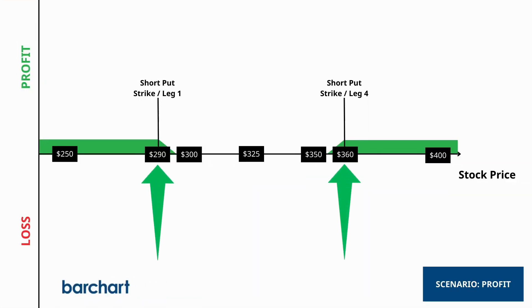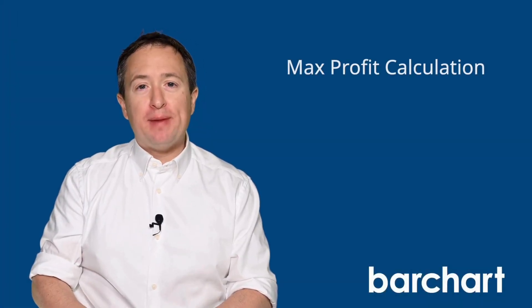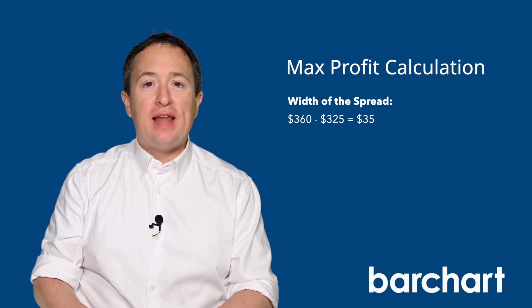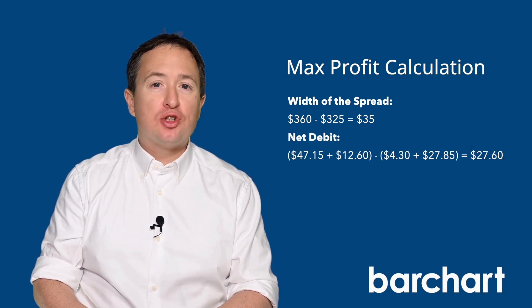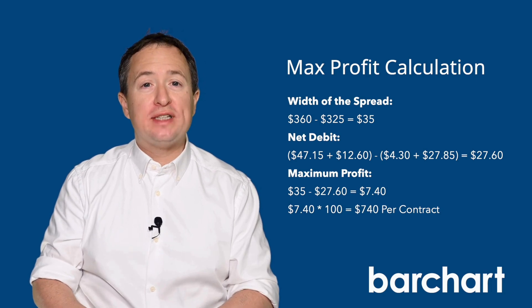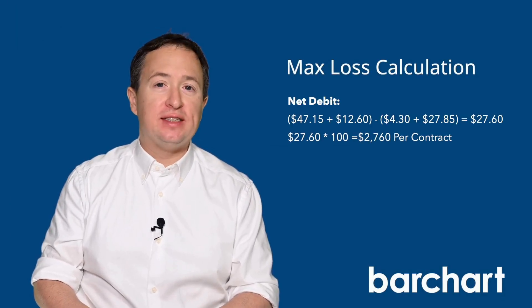Now that we have the details, let's discuss how the trade can go. Long iron butterflies profit when the underlying asset's price moves beyond the short strike prices. So if Tesla trades above $360 or below $290 at expiration, the trade will hit its maximum profit condition. To determine the maximum profit, take the difference between the middle strike and the outer strike price — either one will be equal — making the width of the spread $35.00. Then subtract the net debit that you paid, which is $27.60, and you end up with $7.40 per share, or $740 per contract. On the other hand, if the price of Tesla ends at exactly the long strike, the trade will end at its maximum loss, which is limited to the net debit paid at the start of the trade: $2,760 per contract. Of course, the chances of that happening are very low.